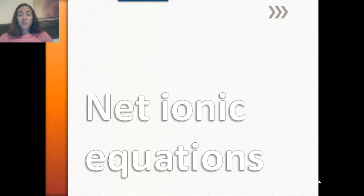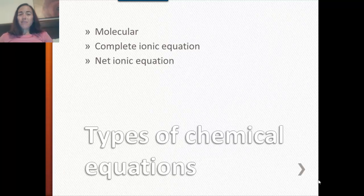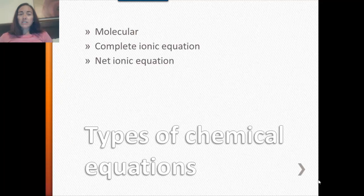Now that you've had a lot of practice writing and balancing equations and using the solubility rules, we're going to put all that together and learn how to write complete ionic equations and net ionic equations. There are three types of equations you're going to need to be able to identify: a molecular equation, a complete ionic equation, and a net ionic equation.